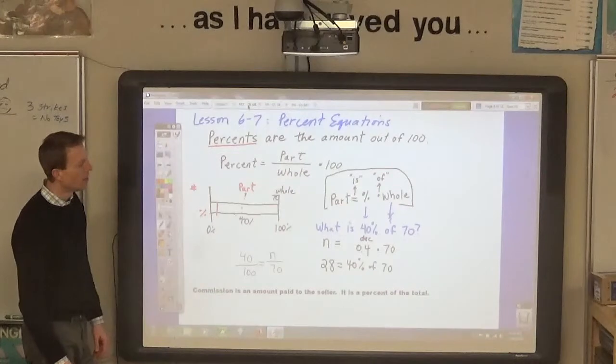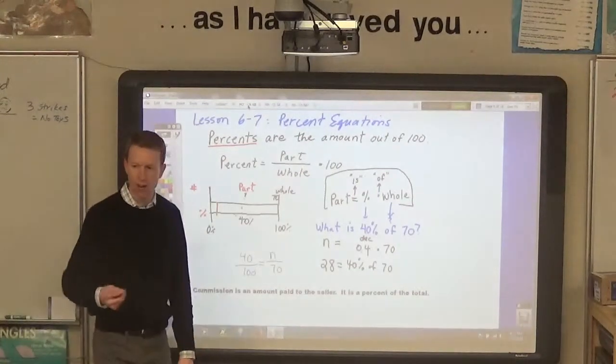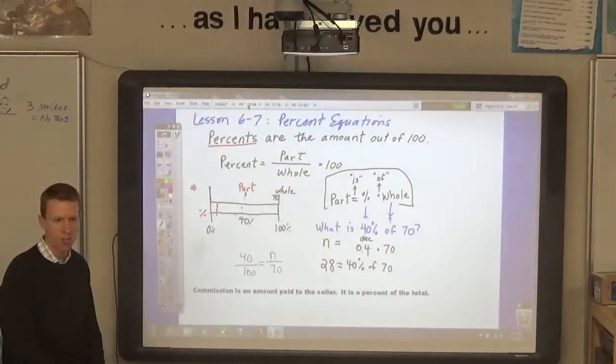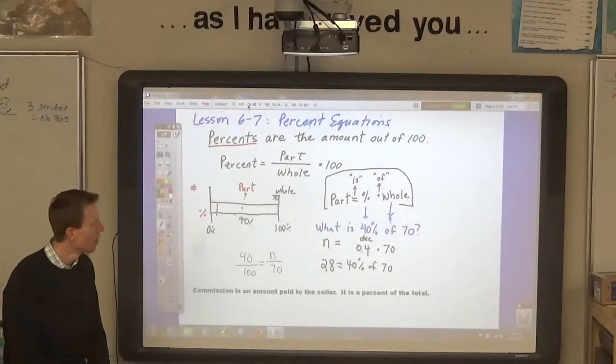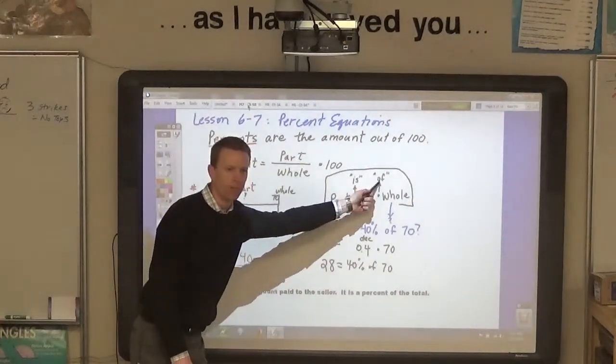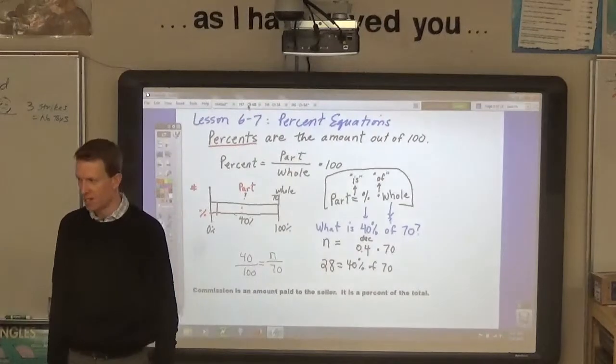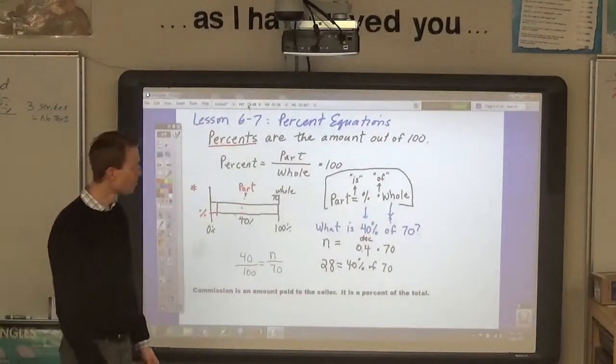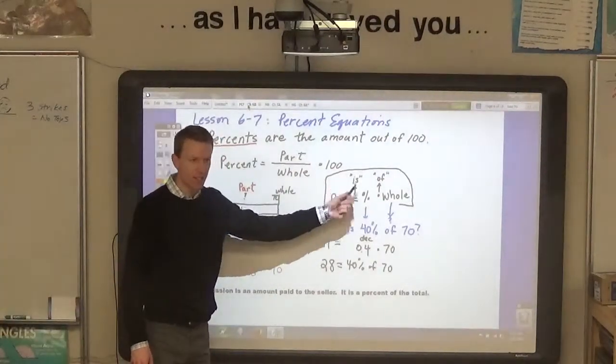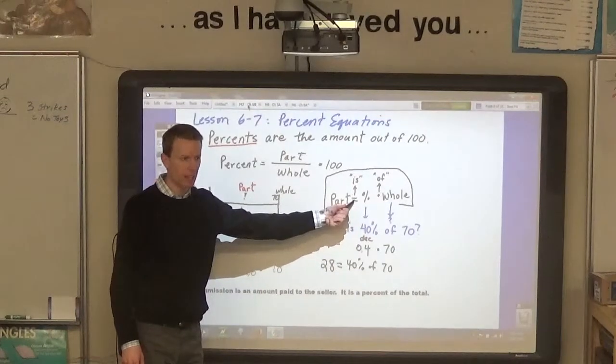Now, there's some words that help you figure out which numbers go where on the model. The words are is and of when you're dealing with percent. The word is refers to the equal sign.